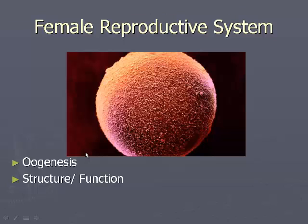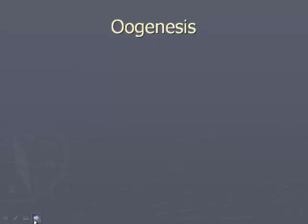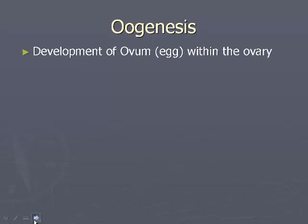Welcome back, this is part two. We're looking at the female reproductive system and we're going to focus on two things: oogenesis and structure and function. So let's get into oogenesis — basically it is the development of the egg. The biological term for the egg is called the ovum, and the plural is ova. This occurs within the ovary.